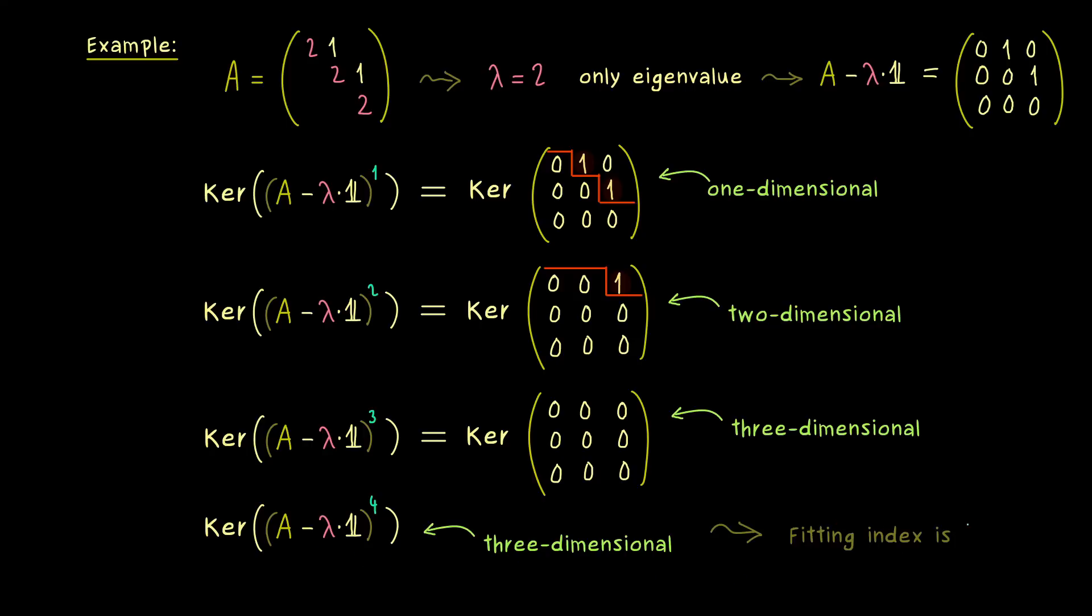And as we learn soon, there we would say that the fitting index is given by three. So maybe this seems quite trivial here. But we will see that the existence of such a fitting index in general has some nice implications. In particular it's the key to the Jordan normal form transformation.